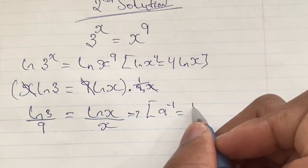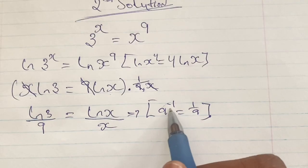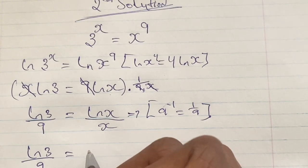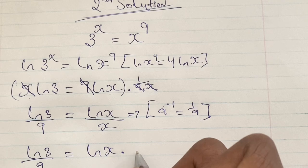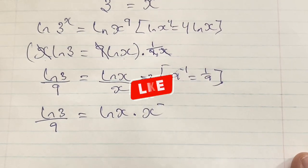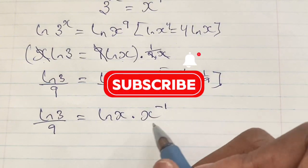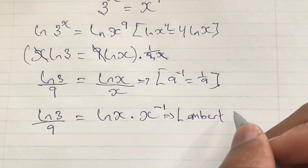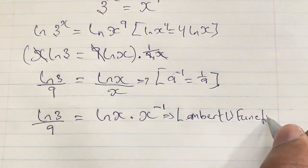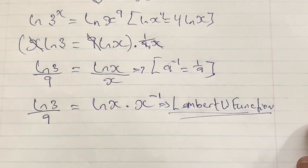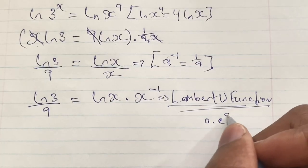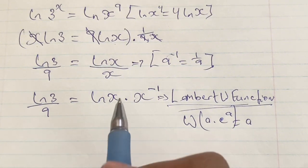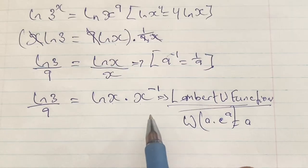This can be rewritten using the law of indices where a to the power of negative 1 equals 1 over a. So we write ln 3 over 9 is equal to ln x times x to the power of negative 1. I would like to introduce the Lambert W function, a special function that can be applied when we have two occurrences of a variable. The Lambert W function has the form: if we have an expression a times e to the power of a, applying the W function gives us a.